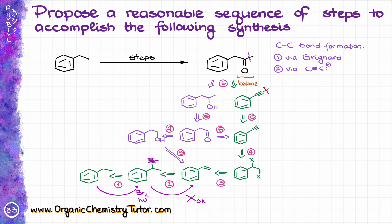Next, we are going to do halogenation to add two halogens to our alkene. For that, I'll use simple halogenation with bromine — reacting our molecule with Br2 — which gives me the corresponding dibromide.